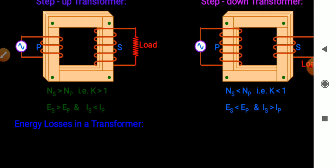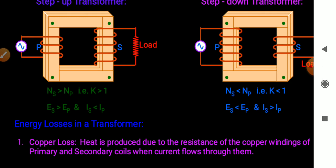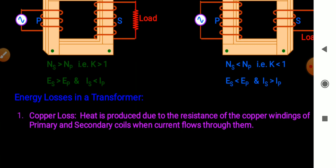Let's talk about energy losses in transformers. In practice, the power output of a transformer is less than the power input because of unavoidable energy losses. The first loss is copper loss. Heat is produced due to the resistance of the copper windings of the primary and secondary coils when current flows through them. This waste of energy is known as copper loss. It can be minimized by using thick wire for the windings.